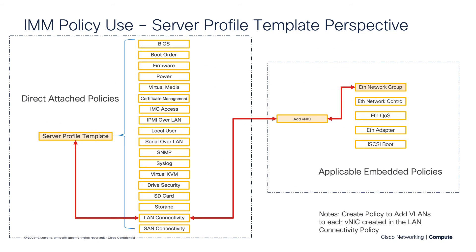As with all IMM Expert Series videos, I like to show a graphic slide that illustrates the relationship between the server profile template and ultimately the policy in question. Looking on the left, we have the server profile template. We can attach a LAN connectivity policy directly to that template, and that LAN connectivity policy has embedded policies. When we add a VNIC to that LAN connectivity policy, the embedded policies on the right become selectable — one of which is our Ethernet Network Group Policy.